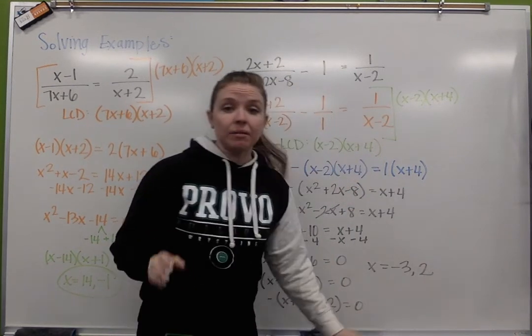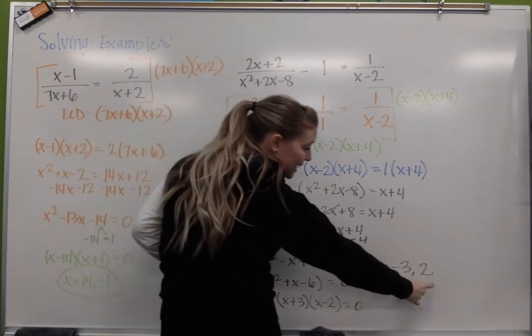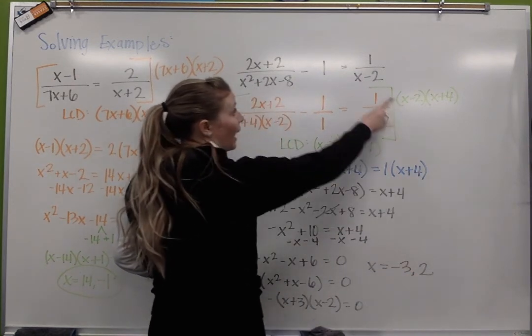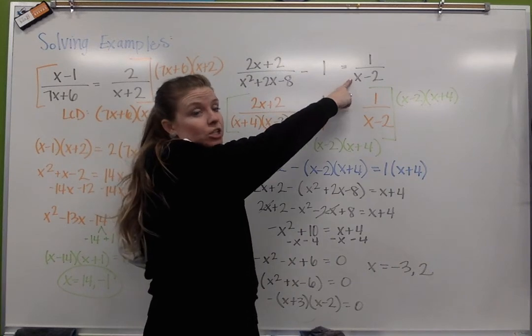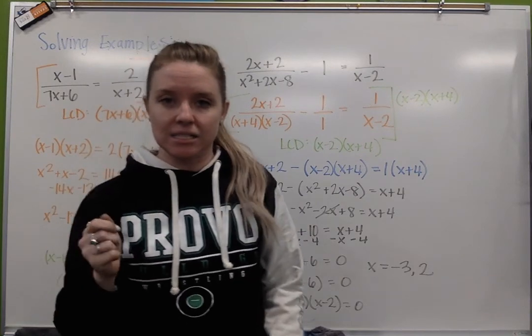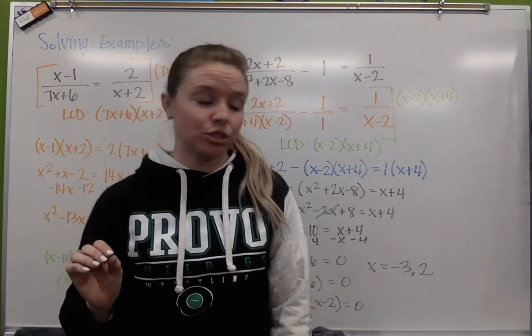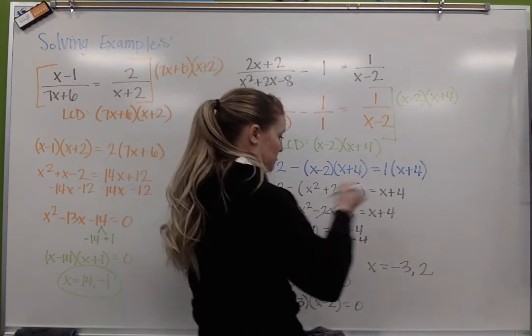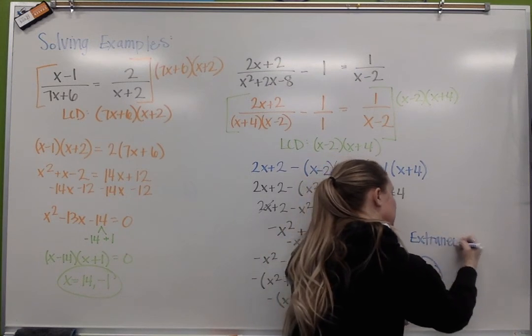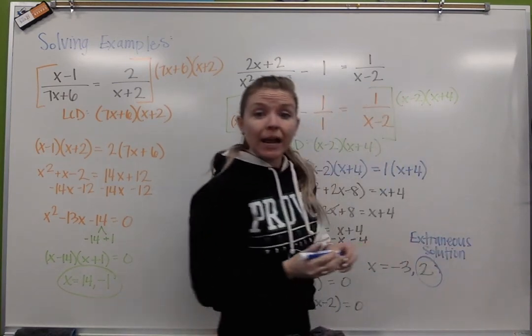All right, with this one we've got to be a little bit cautious. So I did this one on purpose. After we've done all of our algebra, we get our solutions negative 3 and 2. What happens if I take this 2 back and I plug it into my function? 2 minus 2 is 0, I cannot divide by 0. So what we've just found is what is called an extraneous solution.